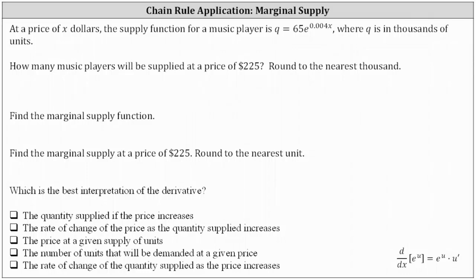At a price of x dollars, the supply function for a music player is q equals 65 times e to the power of 0.004x, where q is in thousands of units. The first question is: how many music players will be supplied at a price of 225 dollars? We're told to round to the nearest thousand.